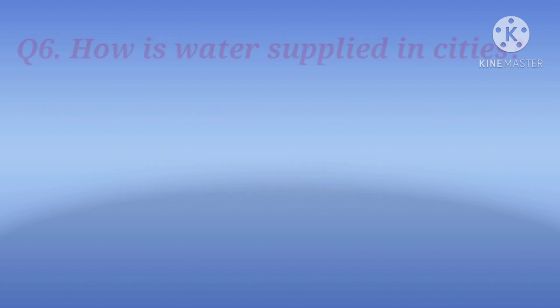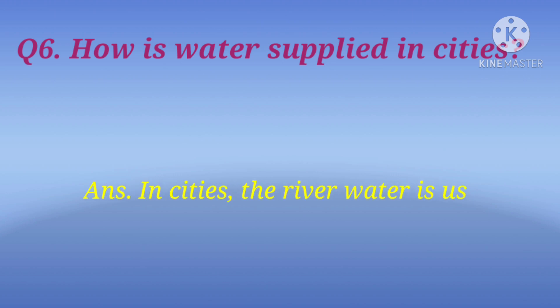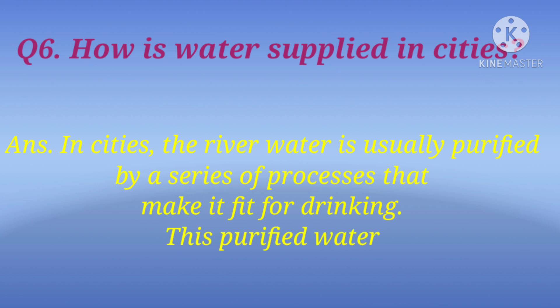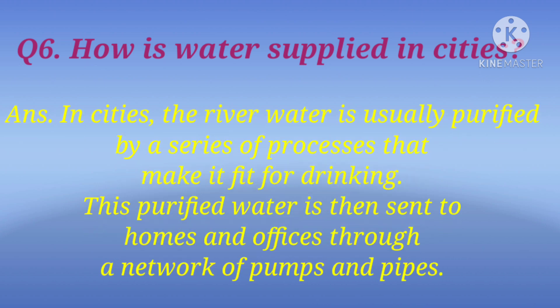And the last question is: how is water supplied in cities? The answer is: in cities, the river water is usually purified by a series of processes that make it fit for drinking. This purified water is then sent to homes and offices through a network of pumps and pipes.